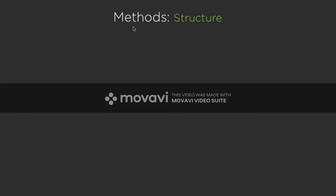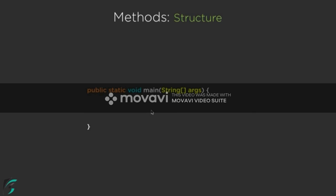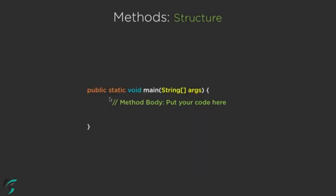First of all, how does a method look like? What is the basic structure of a method in Java? So far we have seen the public static void main method having the argument of String array, and inside this main method we write our code. Whatever code we write inside a method is actually known as the method body.